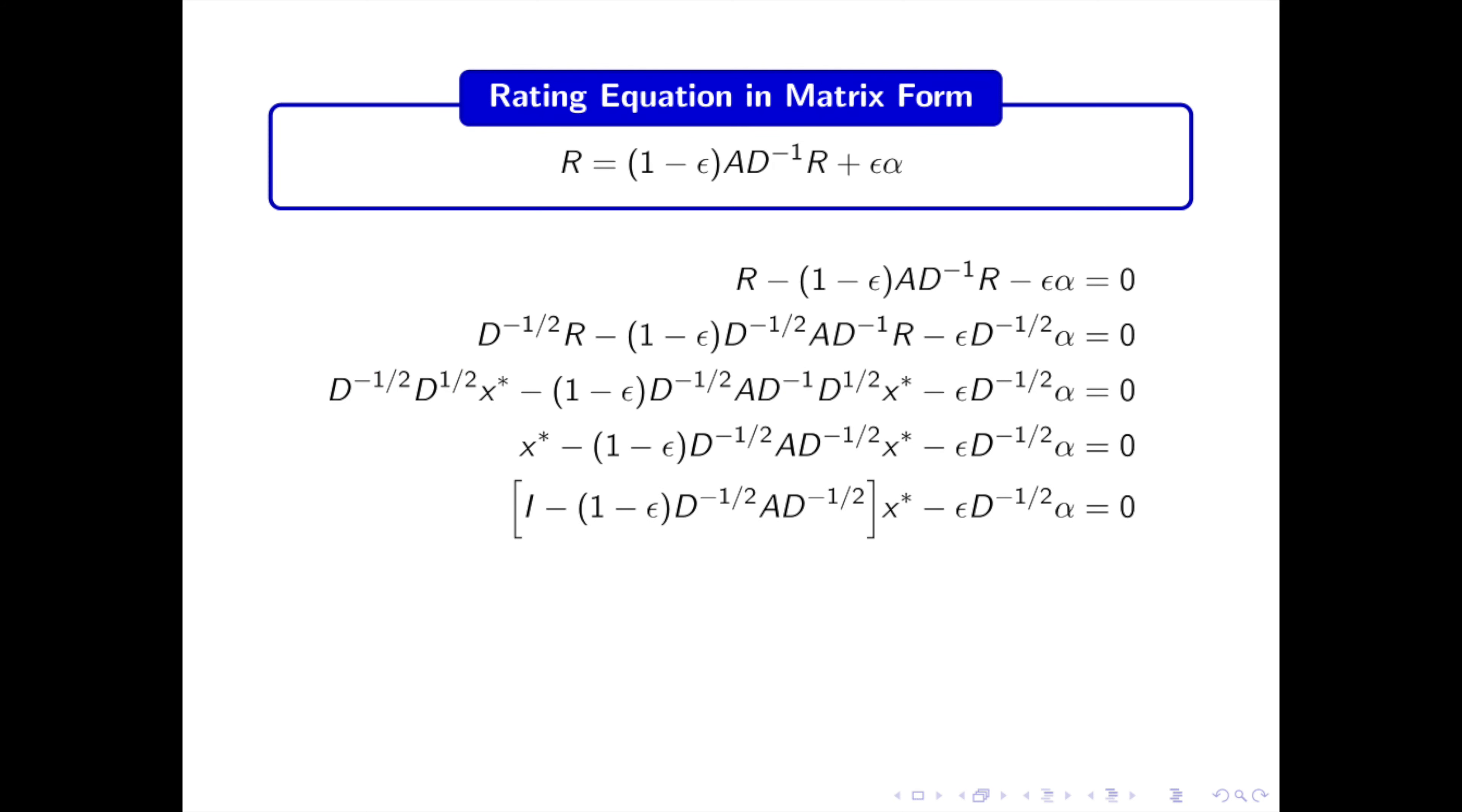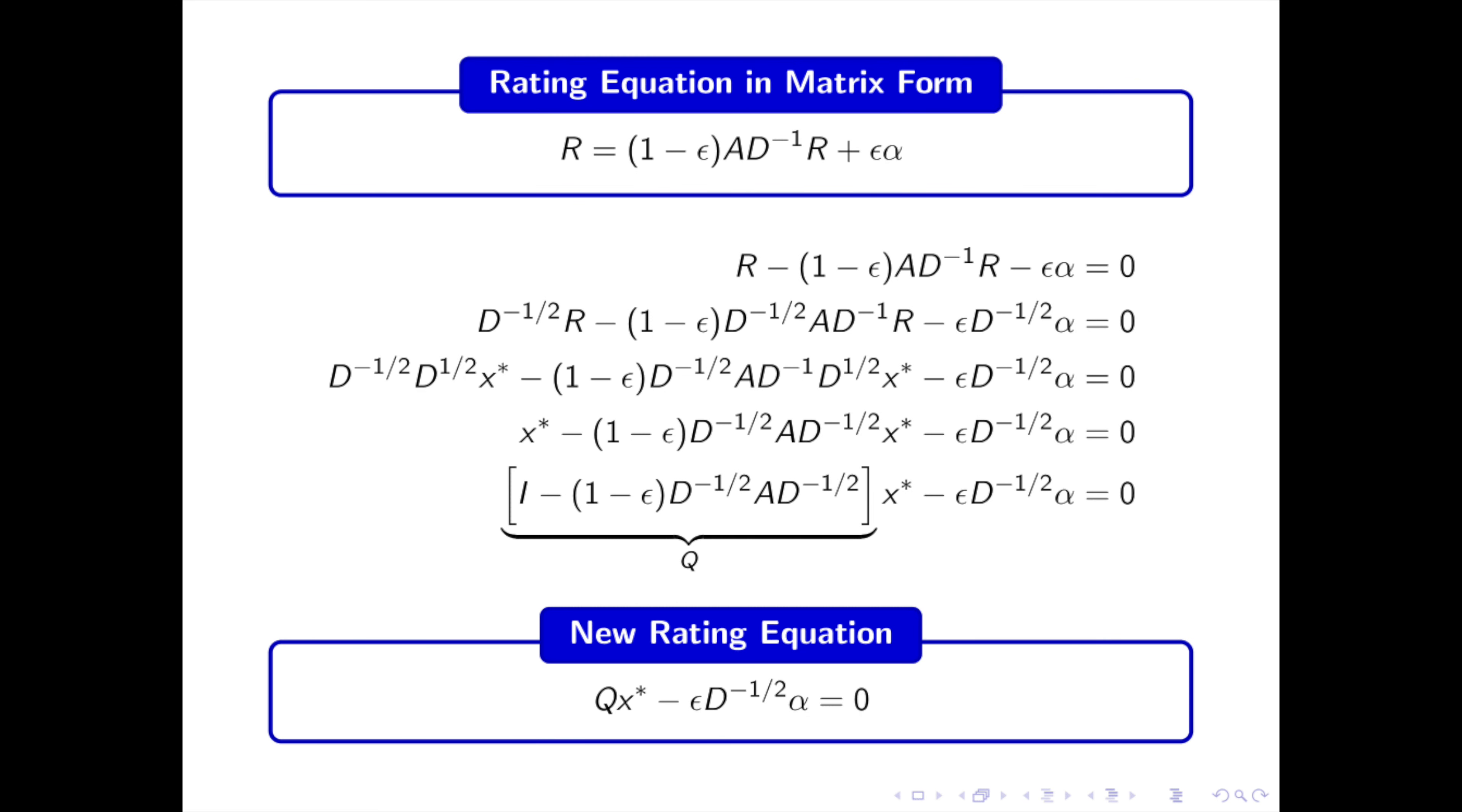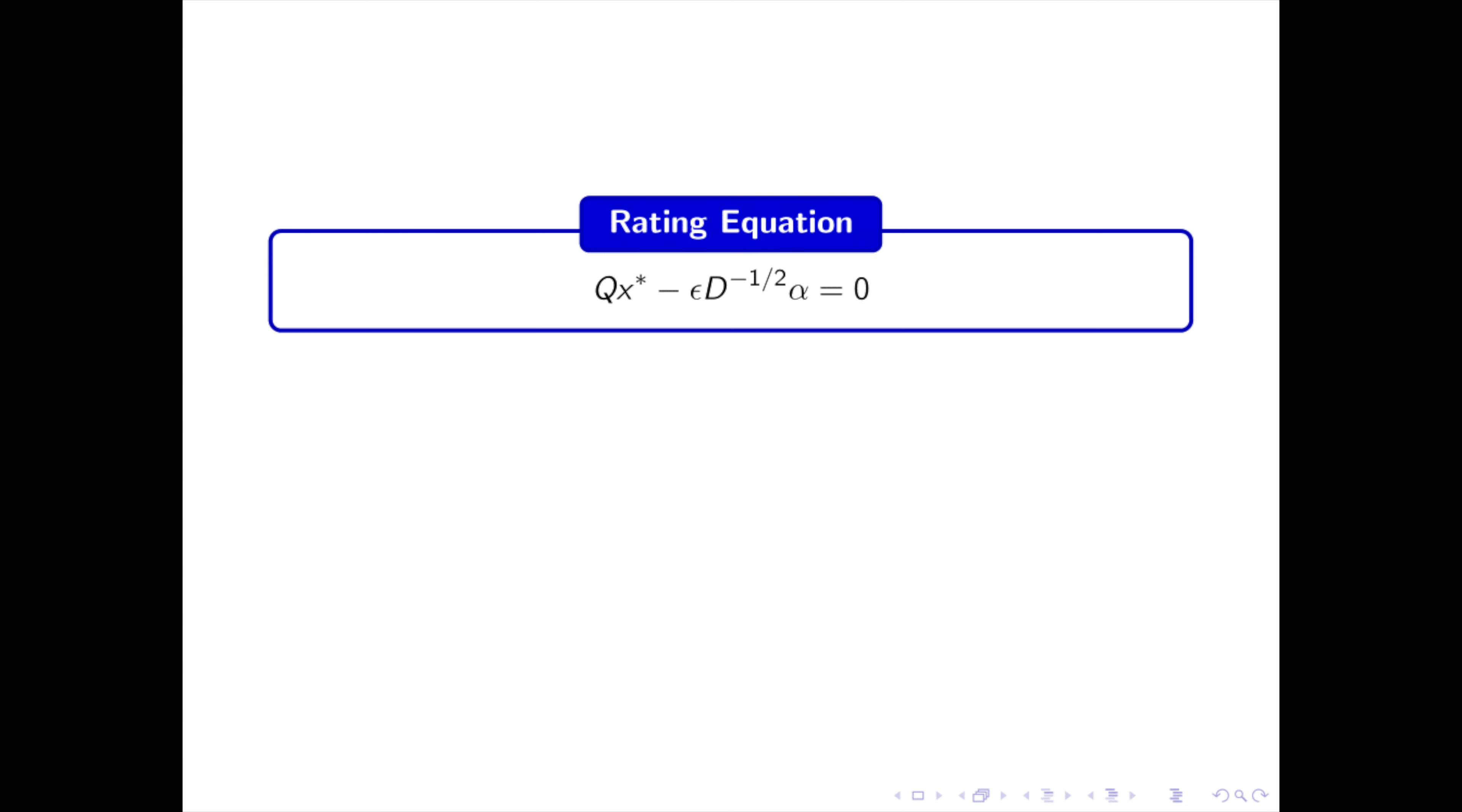Then we move everything to the left side of the equation and we multiply by d to the minus one half. Next, we perform the change of variable r is equal to d to the one half times x star and we can then simplify the products of powers of d. Finally, we can factorize the terms in front of x star and we denote by q the big matrix in front of x star. And we obtain a new equation for the rating vector r.